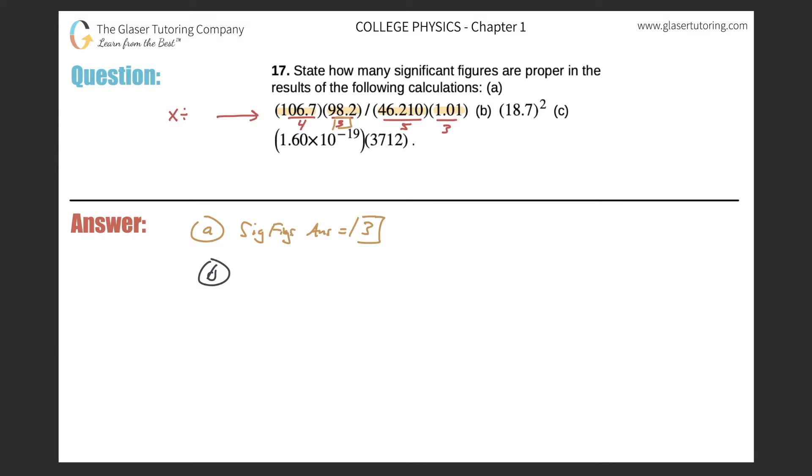So now for letter B, we're doing an operation. We're squaring, so it's 18.7 squared. Let's actually write that down here. So 18.7 squared. That's the same thing, essentially, as saying 18.7 times 18.7.